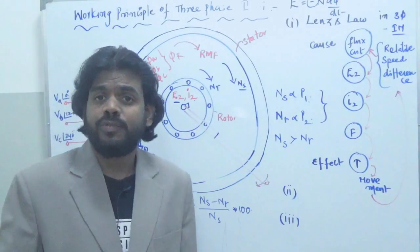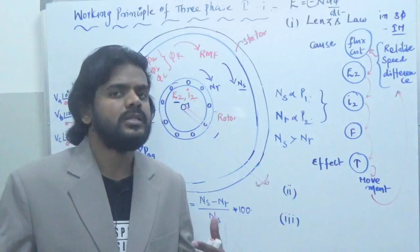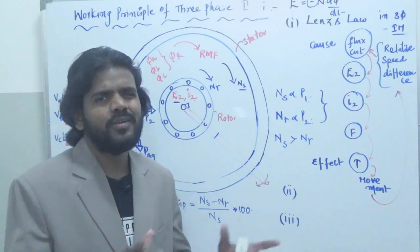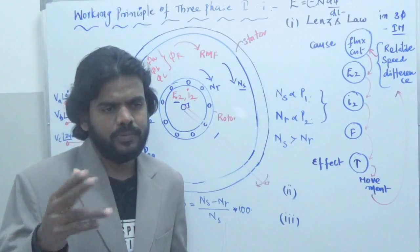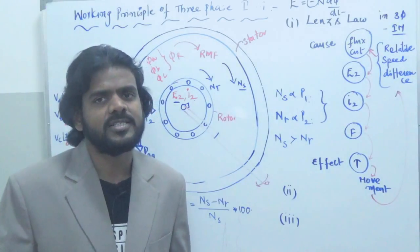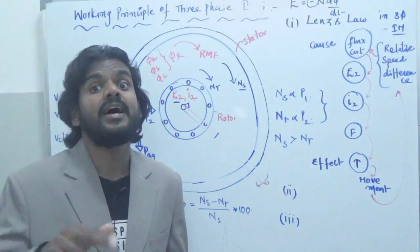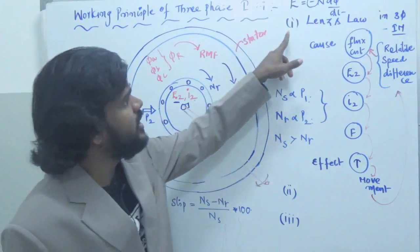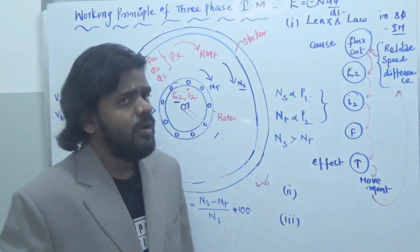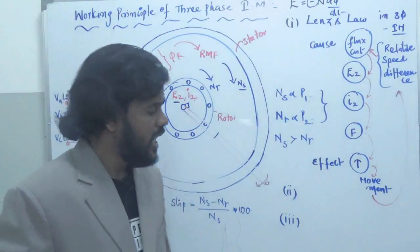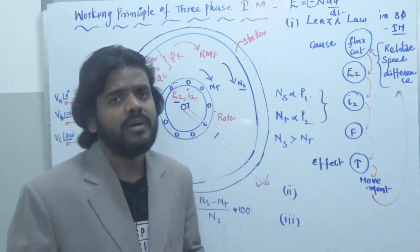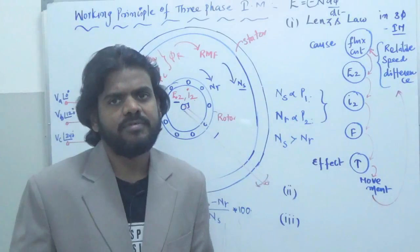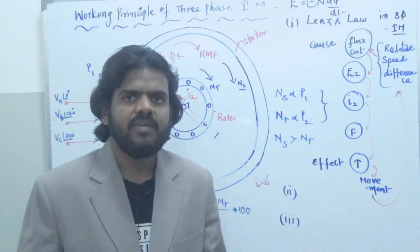Slip affects the EMF induced in the rotor, the current induced in the rotor, the frequency of the rotor, and the torque produced in the rotor. You can observe these variations in the speed-torque characteristics, where torque and speed are governed by slip variations. So to summarize: first, Lenz's law; second, what happens if the rotor catches stator flux speed; third, why the rotor cannot catch the RMF speed Ns.